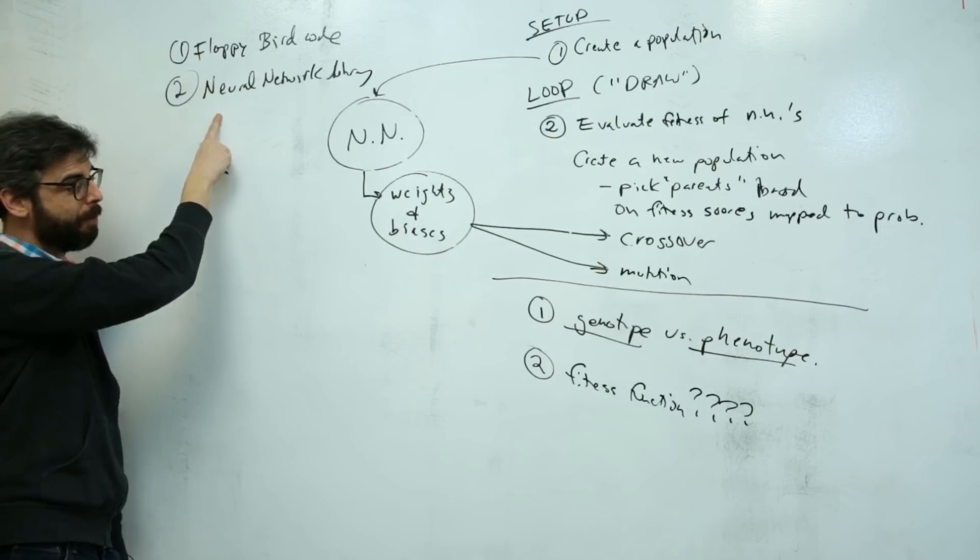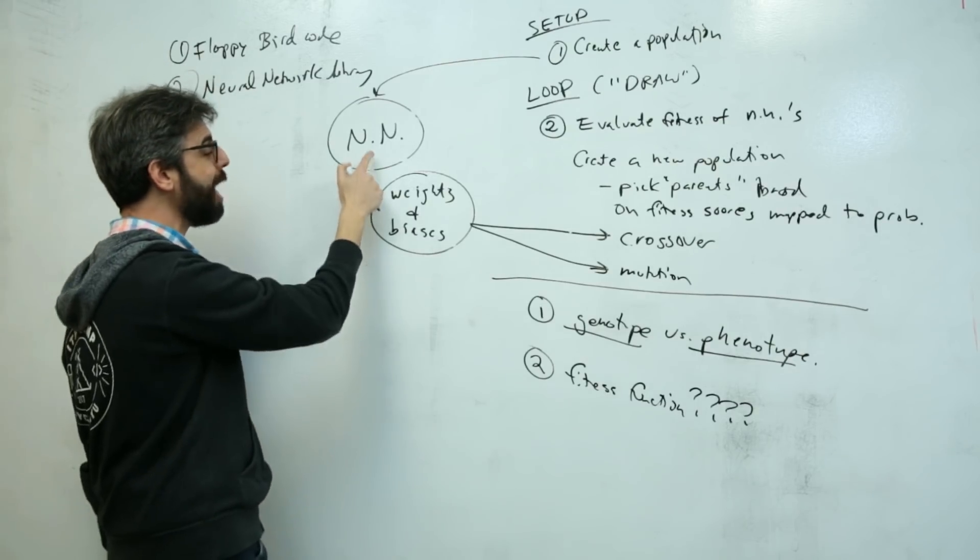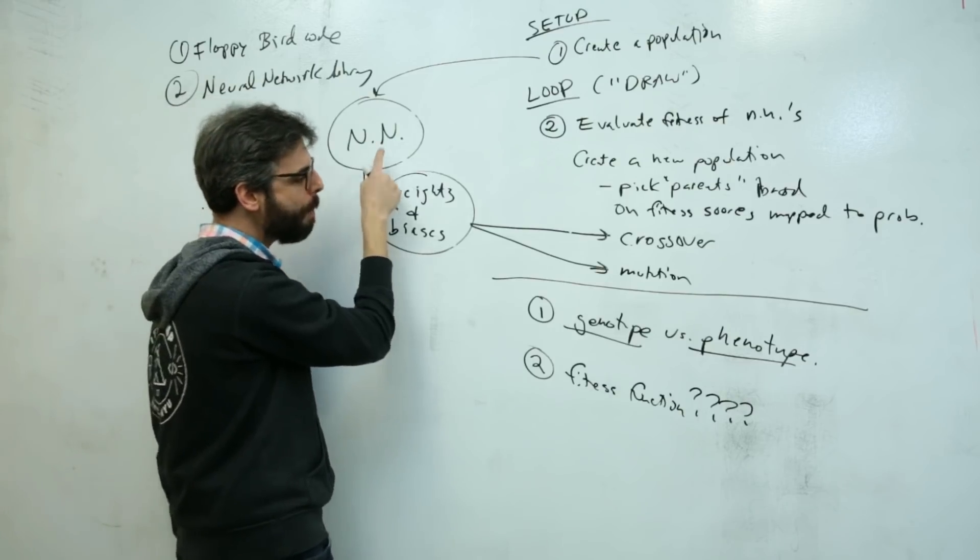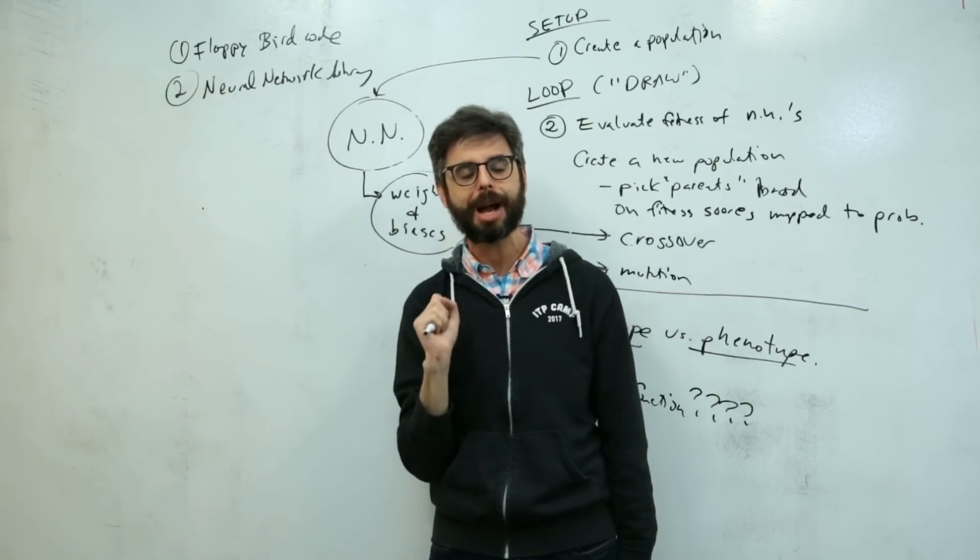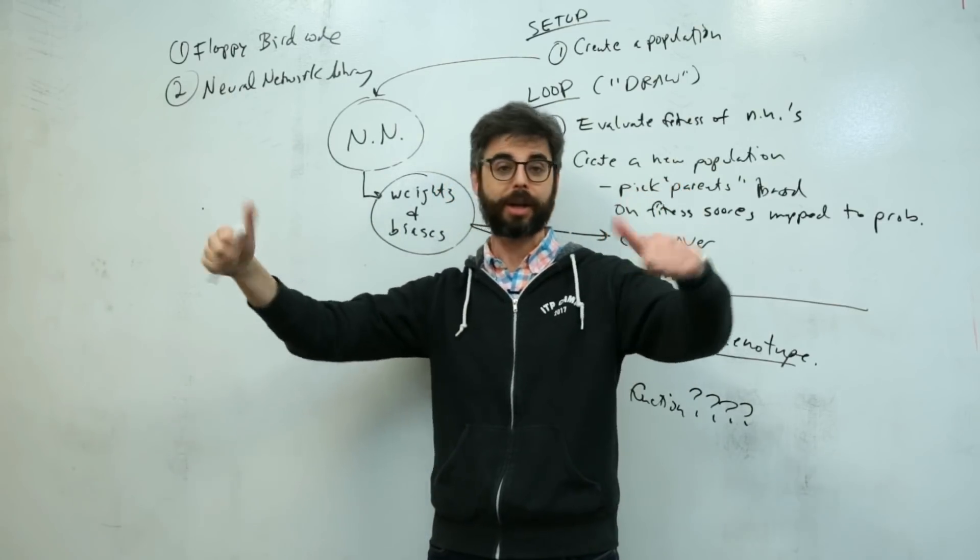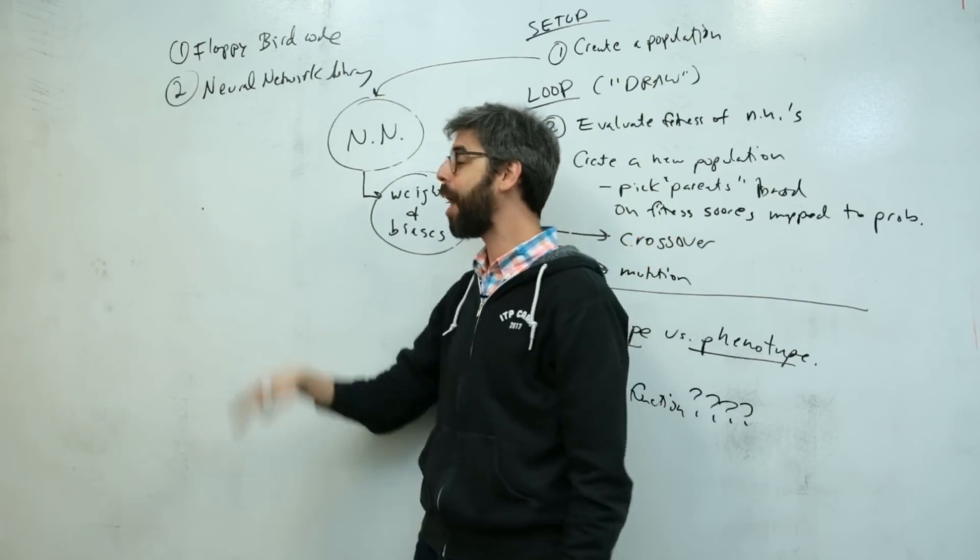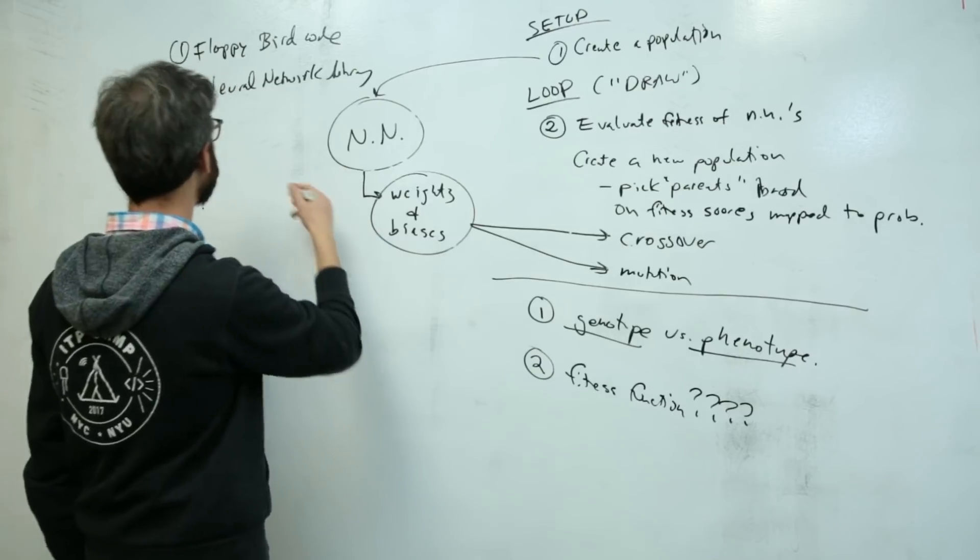I don't have to write the Flappy Bird game or the neural network library. However, it might make sense for my neural network objects to know about crossover and mutation. That should probably go into the neural network library so that at any moment I could say, hey you neural network and you neural network, get together and make another one, or hey you neural network, mutate yourself.